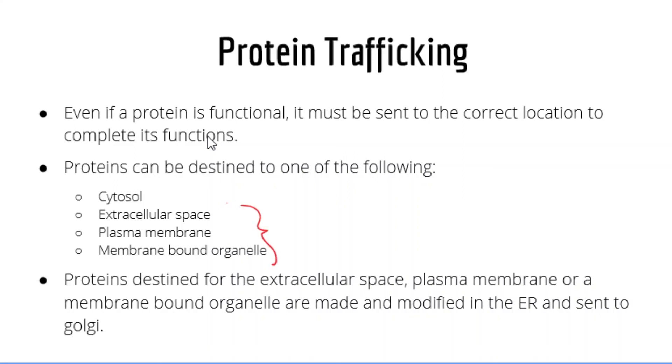That is, they are first made by ribosomes in the ER, and then from the endoplasmic reticulum, they are sent to the Golgi. And then in the Golgi, they are sent to their specific location, which might be the extracellular space, as in a hormone, the plasma membrane, such as a plasma membrane receptor, or a membrane bond organelle, such as the lysosome.